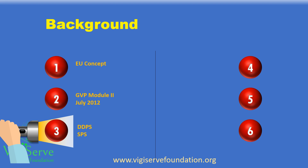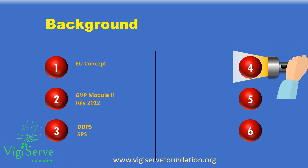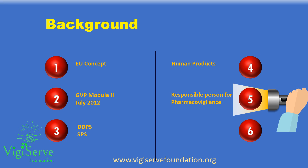In today's time, a DDPS is only required for veterinary products. The SPS, or the Summary of Pharmacovigilance Systems, is a concise document that may be required to be submitted. The PSMF is generally maintained for human products. The countries that mandate PSMF also necessitate the requirement for a Responsible Person for Pharmacovigilance, or a QPPV.